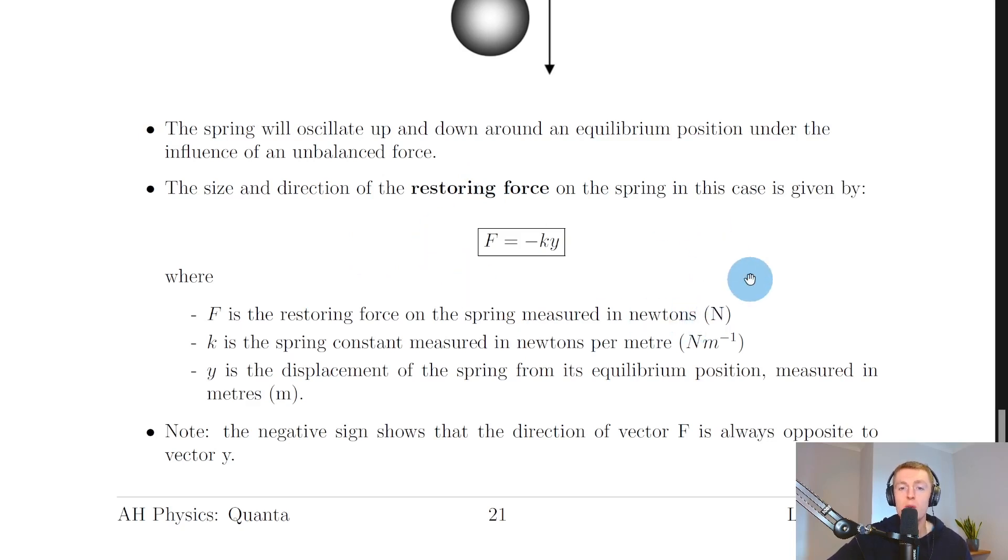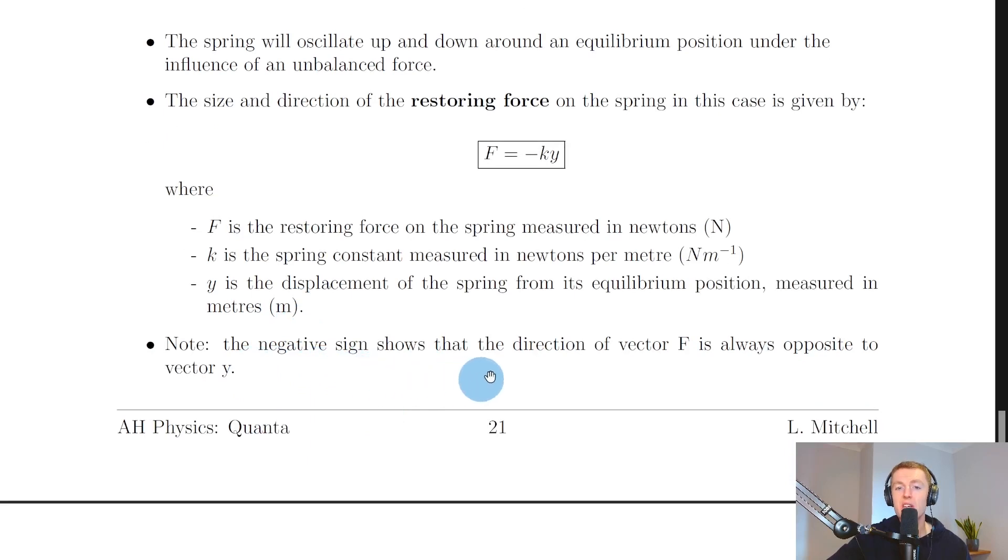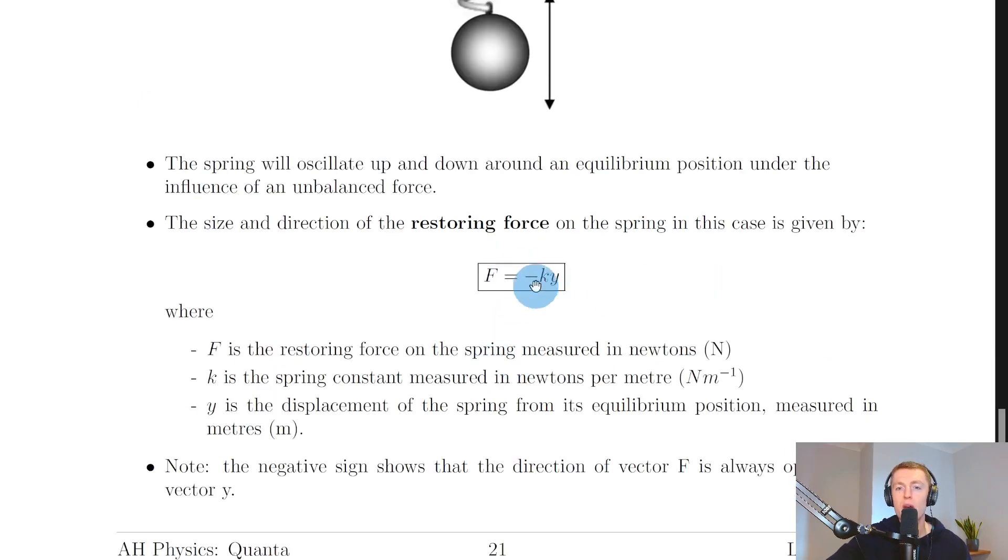This relationship is what we call Hooke's Law, which tells us that the unbalanced force is directly proportional to the displacement of the object undergoing SHM but in the opposite direction. You should note that the negative sign here shows that the direction of the force vector is always opposite to the displacement vector y, so that's why we have this negative sign in the equation.